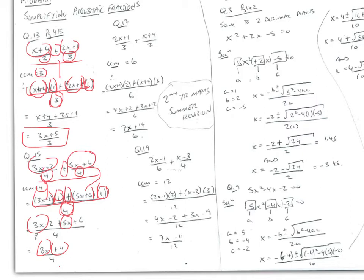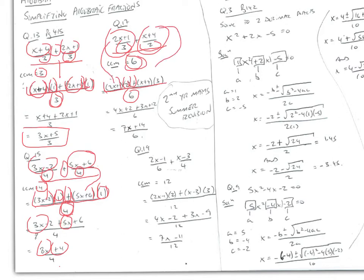Now: (2x+1)/3 + (x+4)/2. The lowest common multiple of 3 and 2 is 6 — the lowest number into which both 3 and 2 will go equally. We draw our line with 6 underneath, set up two sets of brackets, write 2x+1 and x+4. 3 goes into 6 two times, and 2 goes into 6 three times. Multiplying out gives (7x+14)/6.